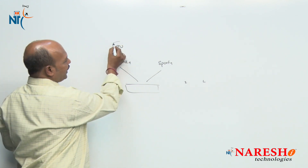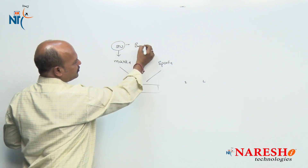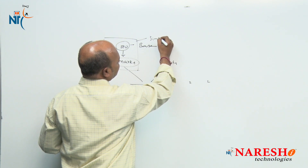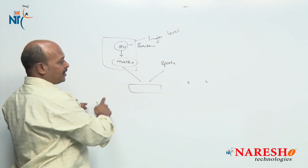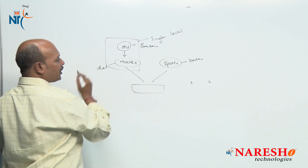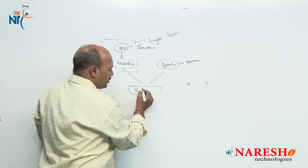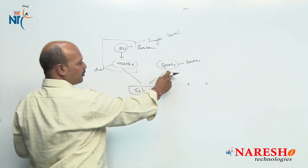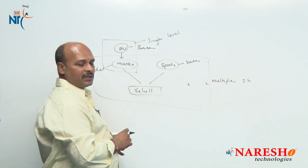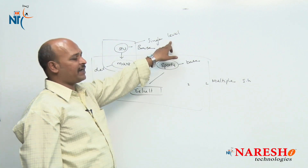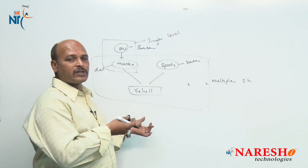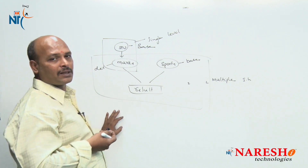That means here, one class is student class — it is the base class. And derived class name is marks. Here this is called single level inheritance. Next, there is another base class called sports. Now we are deriving a new class — result — from marks and sports. That means it is multiple inheritance. So in this example we are discussing both single level inheritance as well as multiple inheritance, meaning we are using more than one inheritance model. That is why it is called hybrid inheritance, or which is also known as multipath inheritance.